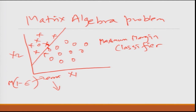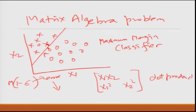Creation of this line in an n-dimensional space becomes a matrix algebra problem. They also extend this — instead of just using two variables x-1 and x-2, they create a hyperplane including interaction terms like x-1 times x-2, x-2 squared, and so on through dot products. They make a massive hyperplane and then create this maximum margin classifier, accounting for error — called a soft maximum margin classifier.